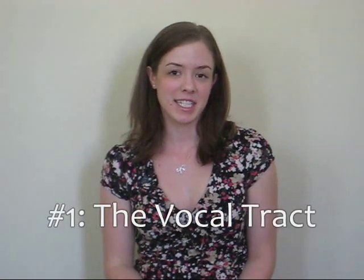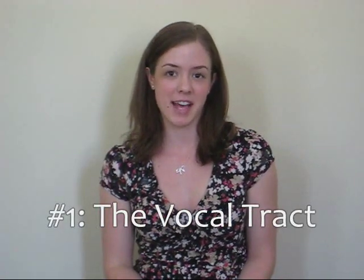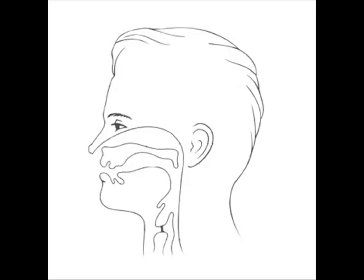First, each and every one of us has a vocal tract, which consists of the organs that we use to make speech sounds. It includes your lips, teeth, tongue, hard palate, soft palate, vocal cords, and more.